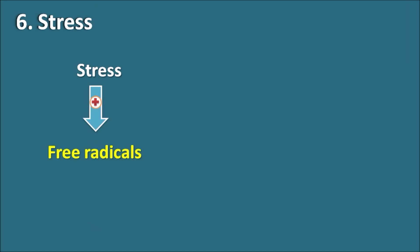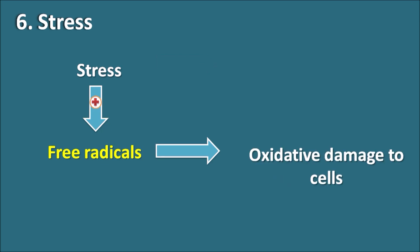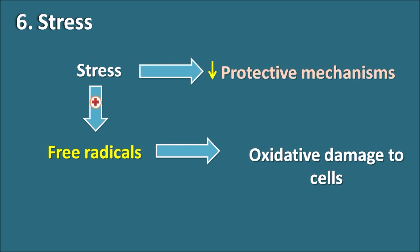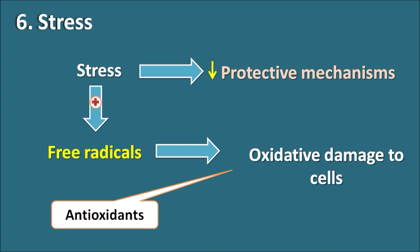The sixth risk factor is stress. Stress can induce the generation of free radicals, which are highly damaging; once generated, they can cause oxidative damage to cells. Stress can also inhibit protective mechanisms, further increasing oxidative damage. We can use antioxidants to control oxidative damage by scavenging free radicals, but antioxidants cannot completely prevent atherosclerosis. A diet rich in antioxidants has a positive effect, but stress should be managed both psychologically and physiologically.